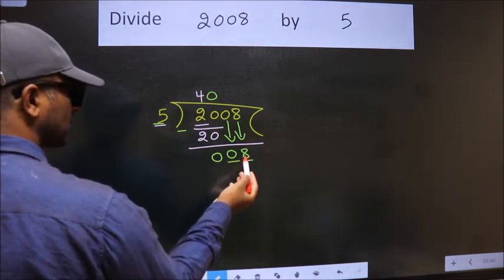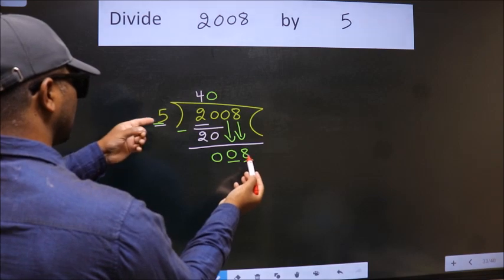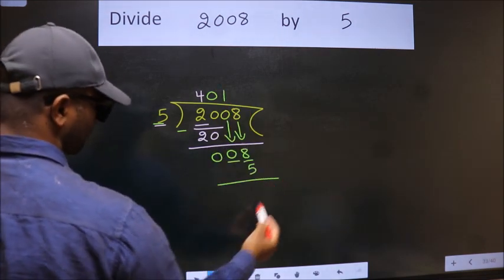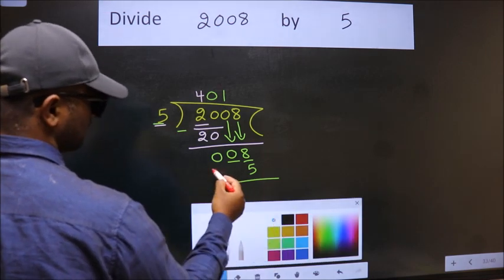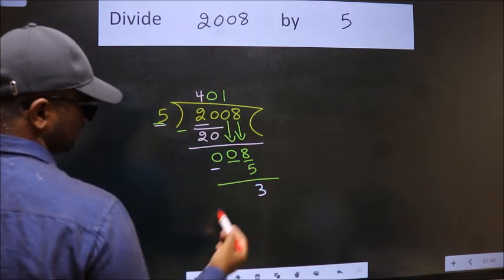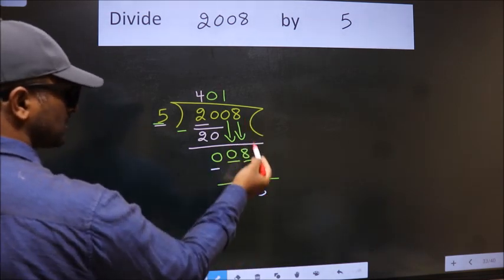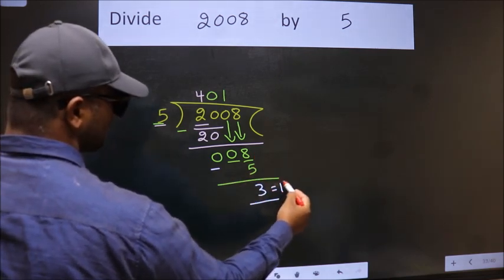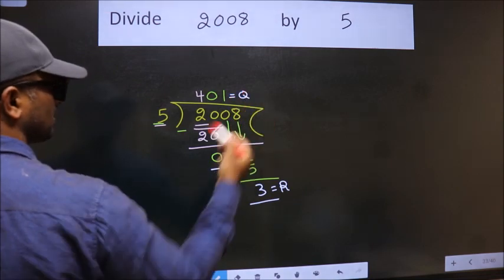So eight. A number close to eight in the five table is five once, five. Now we subtract and get three. No more numbers to bring down, so we stop here. This is our remainder, and this is our quotient.